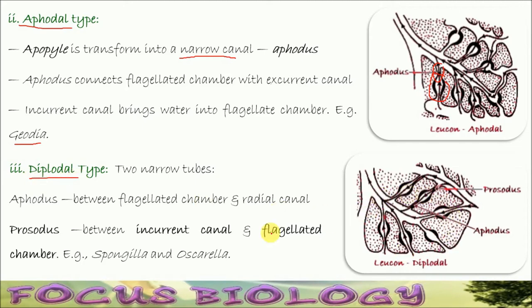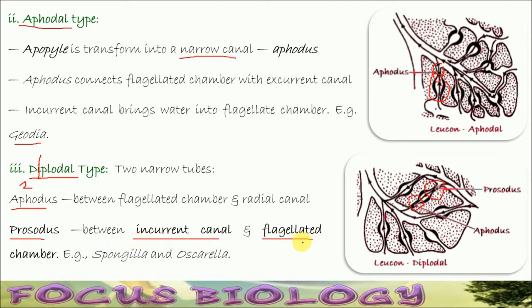Diplodal type. Di means two — there are two narrow canals. One is called aphodus, between the radial canal and flagellated chambers. And the second one is prosodus, between the incurrent canal and the flagellated chamber. It is found in Spongilla and Oscarella.